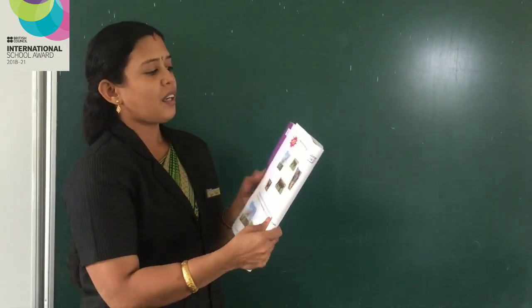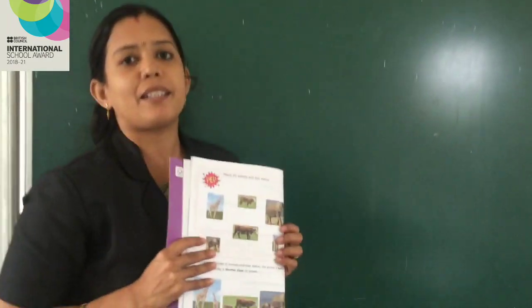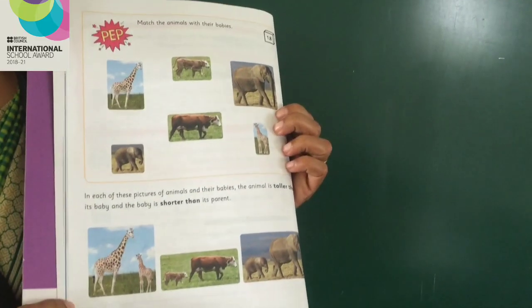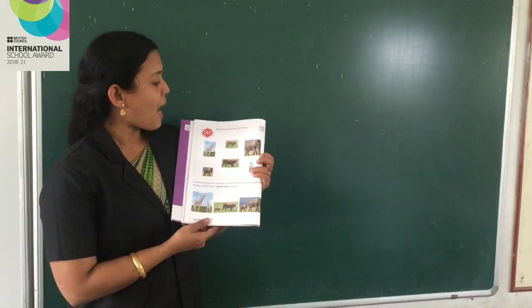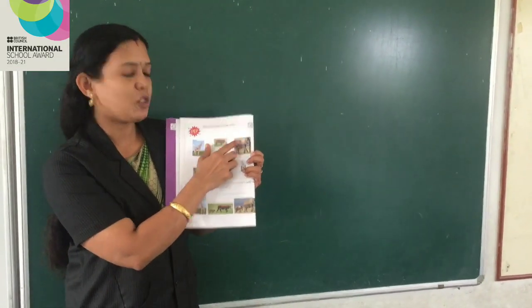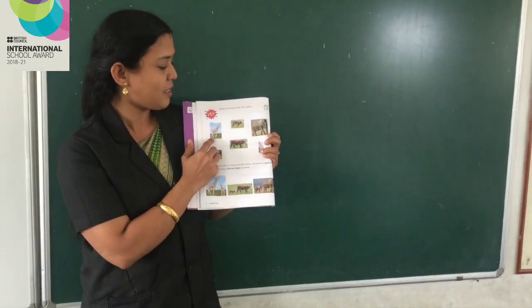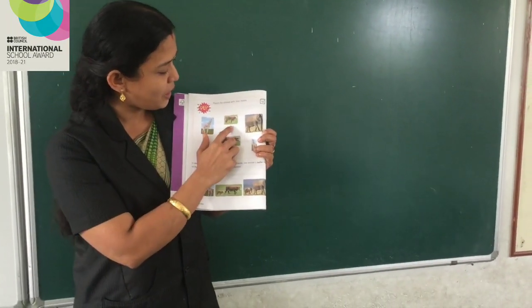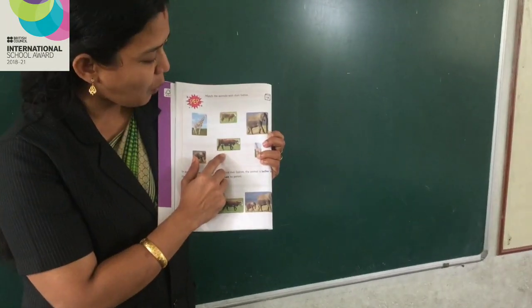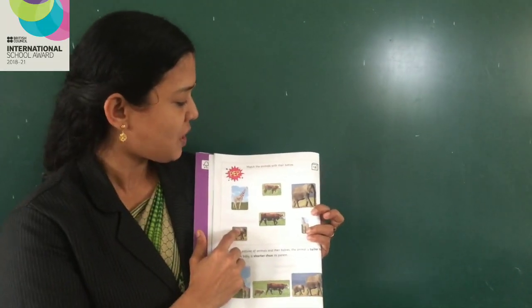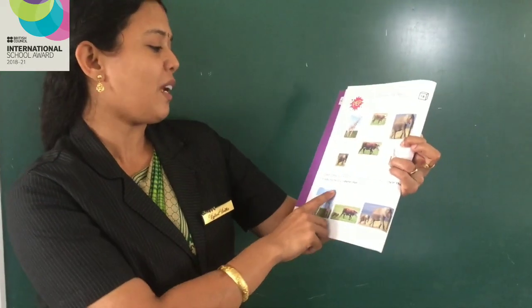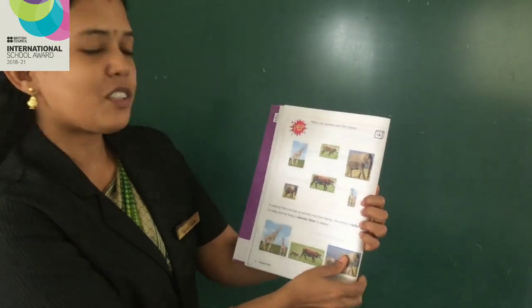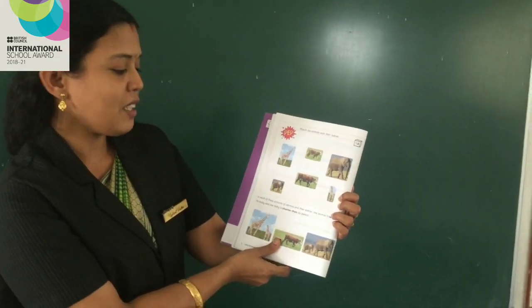Next is the activity on page number 6. Here, match the animals with their babies. The animals are giraffe, sheep, cow, and elephant. You have to match the animals with their babies. From this you can understand which animal is taller and which animal is smaller.